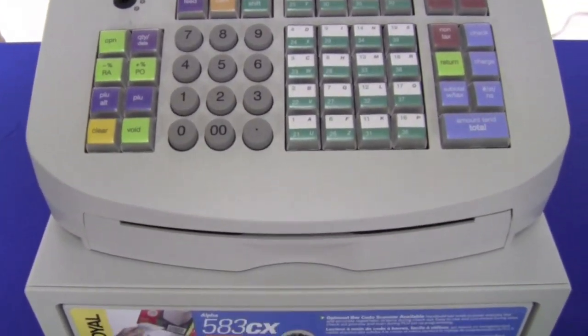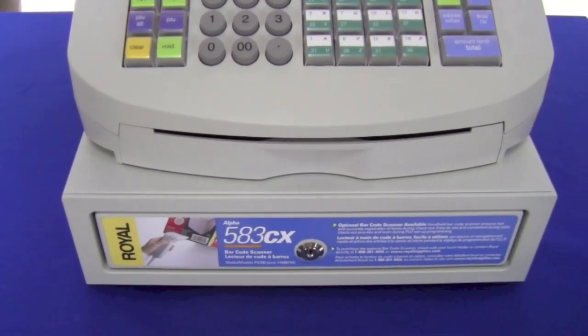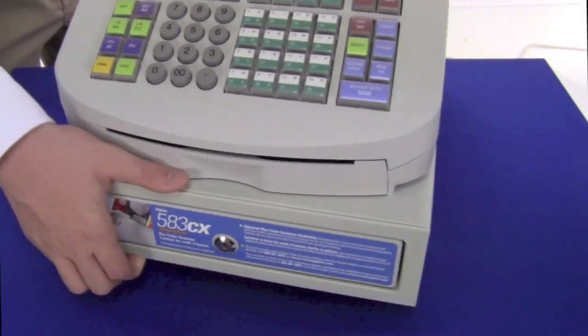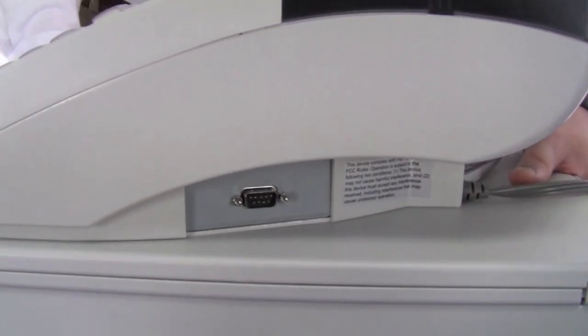Under the keys are the two trays and on the side of the machine is the port for the optional barcode scanner.